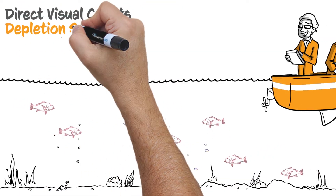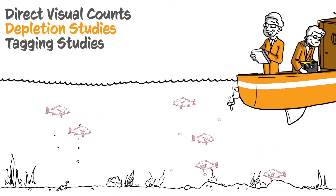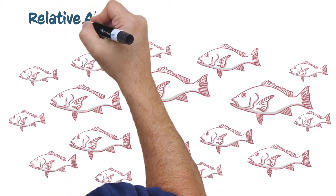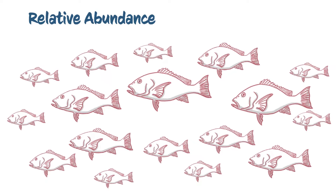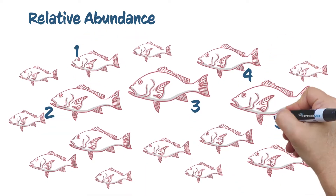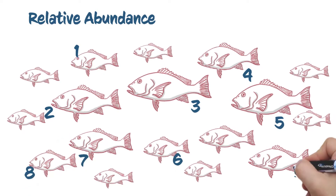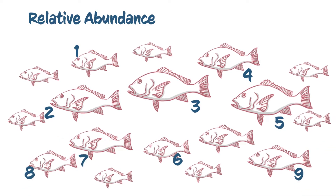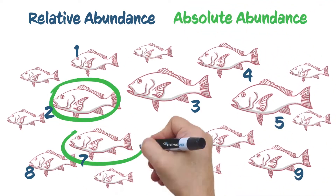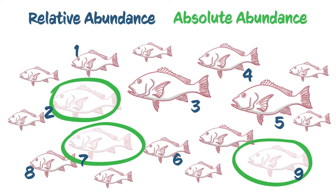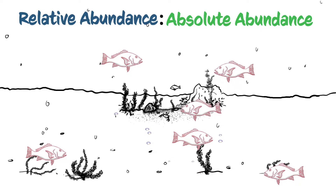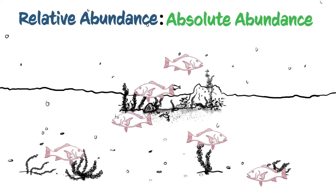Depletion studies at natural and artificial habitats will provide another estimate of red snapper abundance. Generally speaking, depletion studies estimate site abundance by comparing two types of information: relative abundance — an index much like a population census for fish, which provides a record of how common a species is relative to other species in the community — and absolute abundance, in other words a known number of fish removed from the population. The ratio of relative abundance to absolute abundance yields a population size estimate.